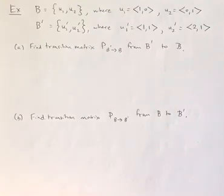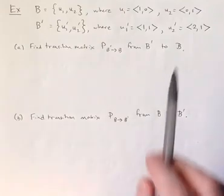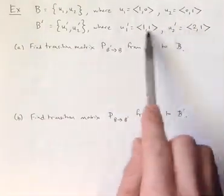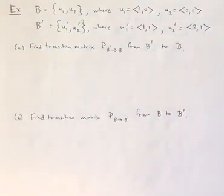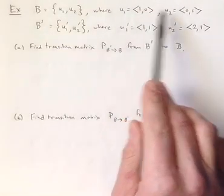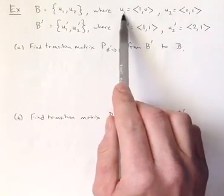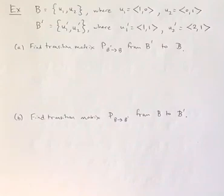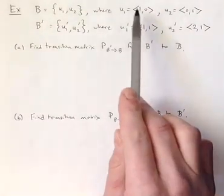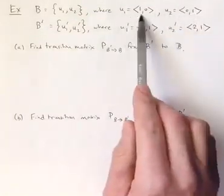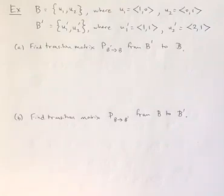Let's talk about coordinates a little bit more. Any vector in R2 can be written as a linear combination of the standard basis vectors, and that same vector can also be written as a linear combination of the other basis. For example, take the vector 5,3. We can write 5,3 as 5 times U1 plus 3 times U2. So 5 and 3 are the coordinates, because they're the coefficients of the two basis vectors. The vector 5,3 relative to the standard basis has coordinate vector 5,3 — it's the same thing. That will always be the case when talking about the standard basis in R^n.